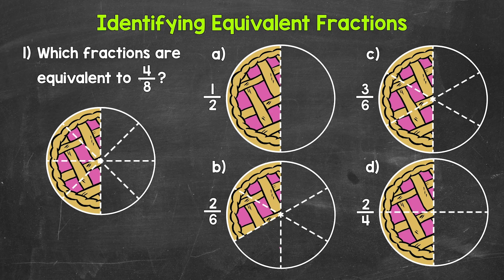Let's jump into number one, where we have: which fractions are equivalent to 4 eighths? We have 4 eighths shown right here with a pie. There were eight pieces in total and four are left, so 4 eighths of the pie is left. We need all of the equivalent fractions — all of the pies with the same amount left, the same part of the whole pie left.